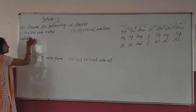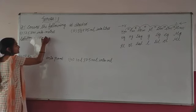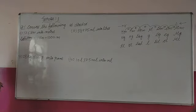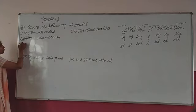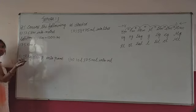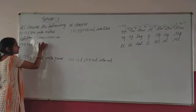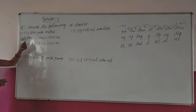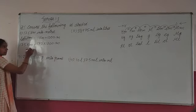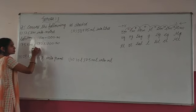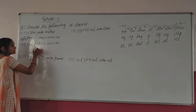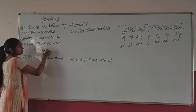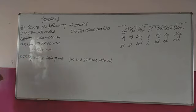Let's see the solution. 1 km is equal to 1,000 meter. 1 km mein kitne meter hote hain? 1,000 meter. Aur hamara question kya hai? 175 km. Isko kis mein change karna hai? Meter mein. So 175 ko 1,000 se multiply kar dein, to kya ban jata hai? 1,75,000 meter. Clear?